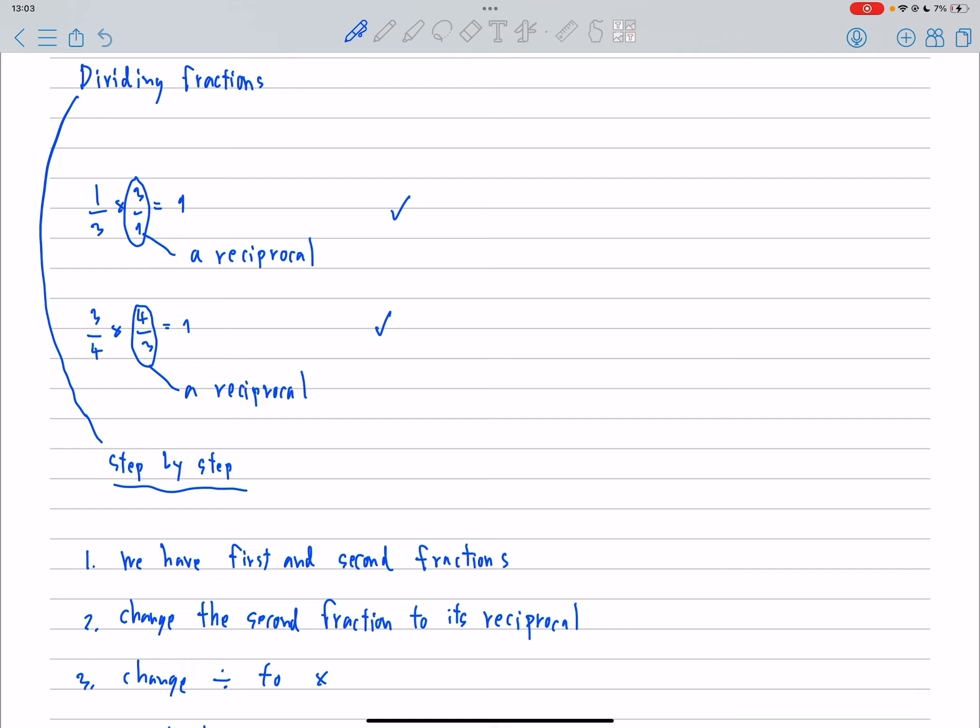And reciprocal of T over 4 is equal to 4 over T because when we multiply both numbers, it's equal to 1.